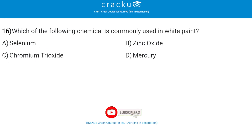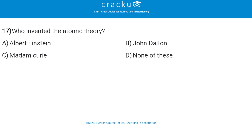Next: which of the following chemical is commonly used in white paint? The correct answer is zinc oxide, that is option B. Next: who invented the atomic theory? The correct answer is John Dalton, that is option B. John Dalton, a British chemist and physicist, developed a theory that matter is simply composed of atoms of different weights and is combined in ratios by weight.